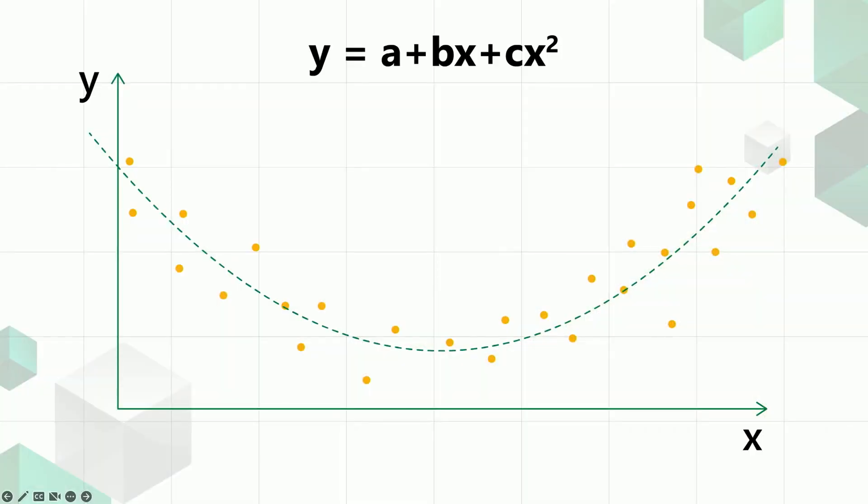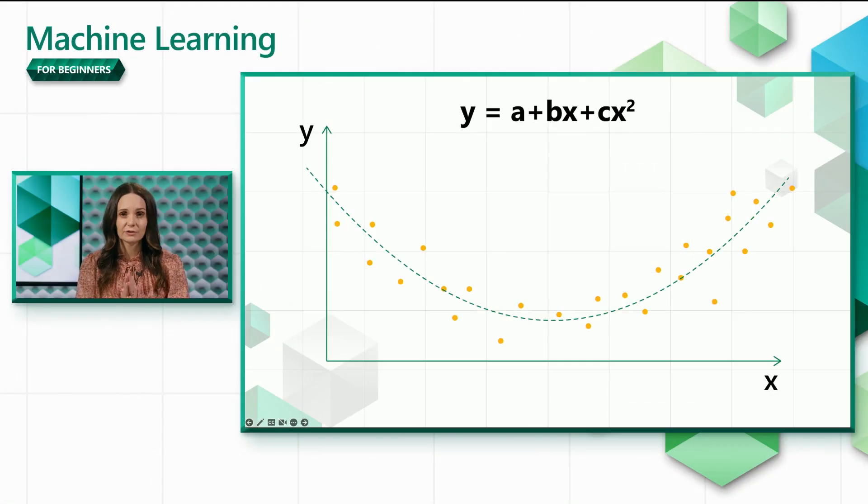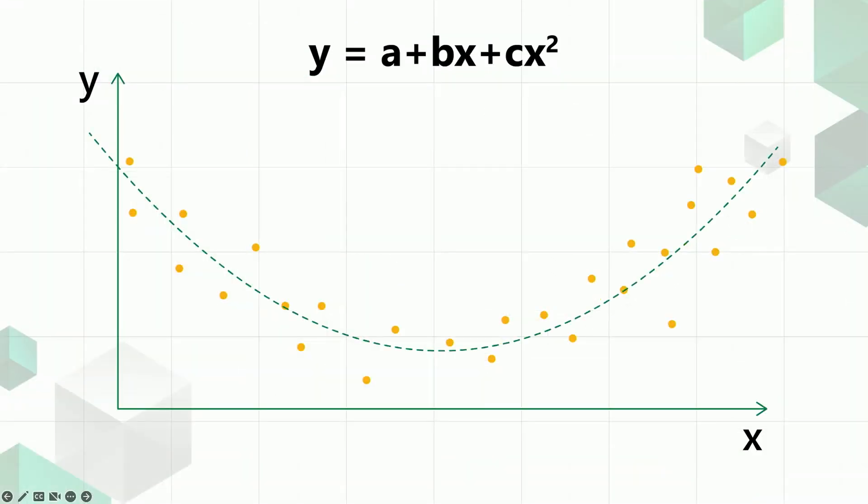For those scenarios, we can consider polynomial regression, which is really just an extension of linear regression that uses a curve to represent the relationship between variables. In this case, x still represents the day of the year and y still represents the price of a package of pumpkins.